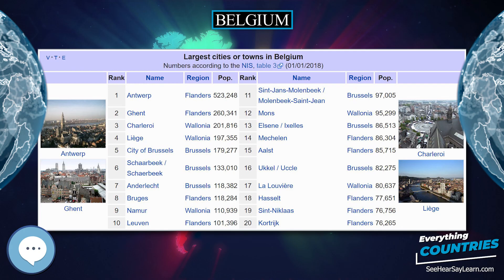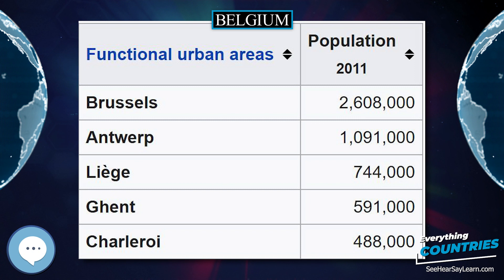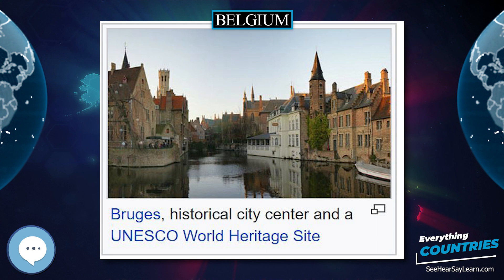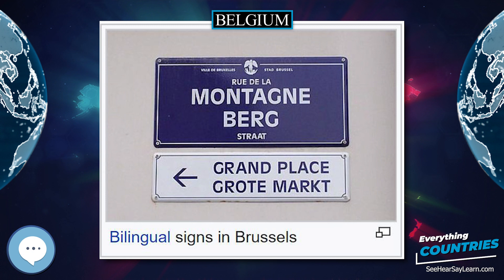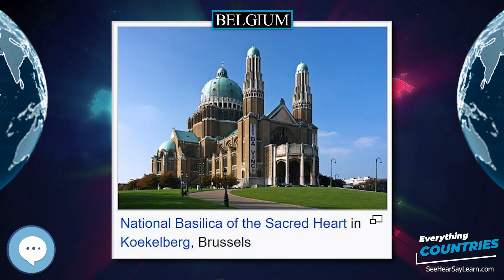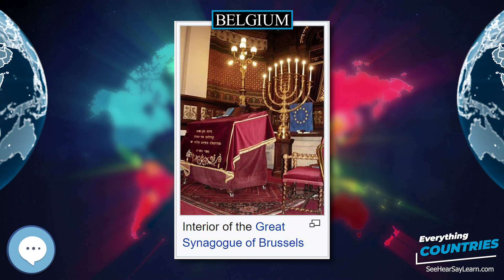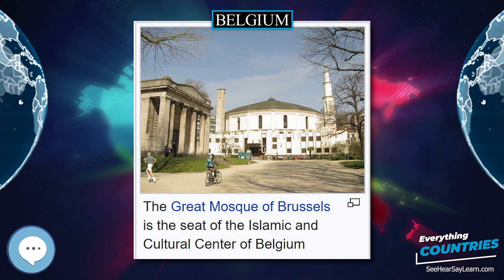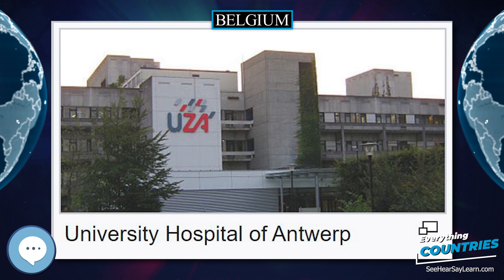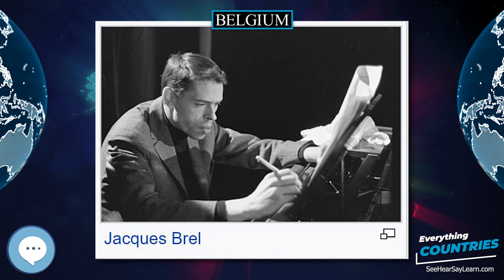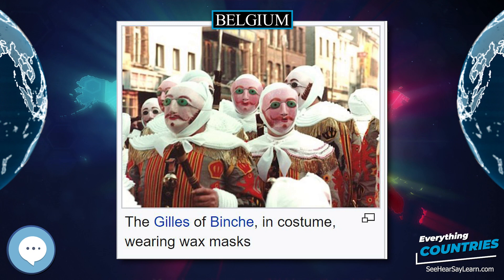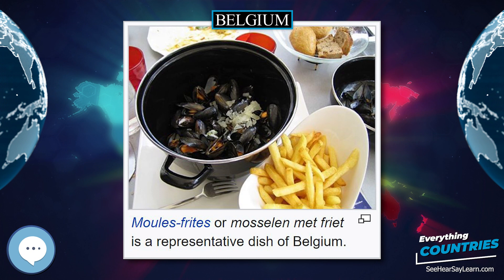Belgium shares borders with France, Germany, Luxembourg, and the Netherlands. Its total surface, including water area, is 30,688 square kilometers. Before 2018, its total area was believed to be 30,528 square kilometers; however, when the country's statistics were measured in 2018, a new calculation method was used that included the area from the coast to the low water line, revealing the country to be 160 square kilometers larger. It lies between latitudes 49°30' and 51°30' north, and longitudes 2°33' and 6°24' east.